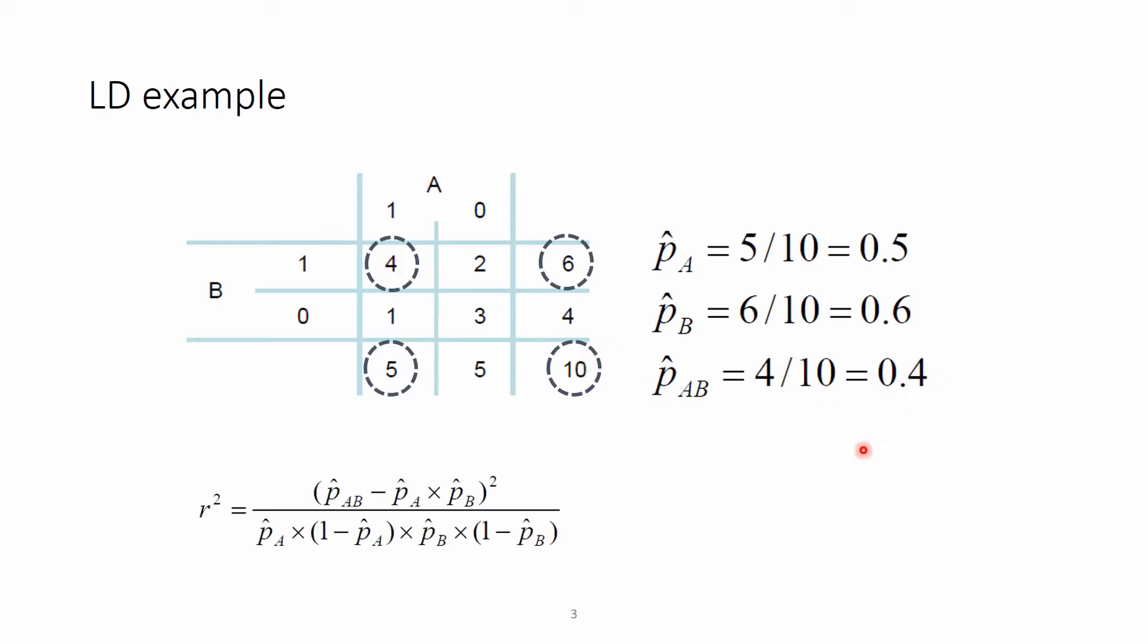When we have our usual equation, we basically have all the unknowns, so the proportion of AB and AB, and we put them in, and after the computation we get the LD between these two loci A and B as 0.167.